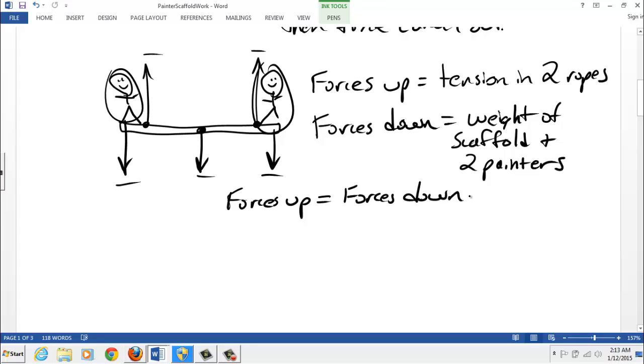In order for everything to have constant velocity, in this case we're going to assume the velocity is zero and everything stays zero, that's the key, it's not changing. So the up forces are two tensions, two ropes, tension in each rope, and then we've got the scaffold and two painters.